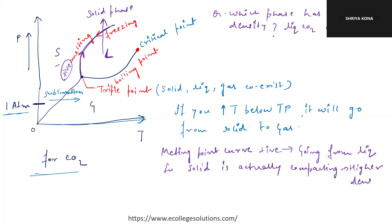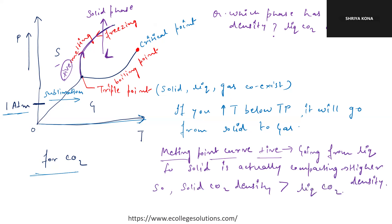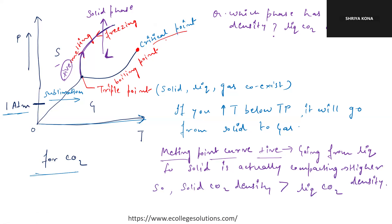You might already know that solid CO2 has higher density, but on the MCAT when you get two or three different types of curves, you need to explain which curve is for CO2 and which is for H2O. Because the melting point curve here has a positive slope, we can say that solid CO2 density is actually higher than liquid CO2 density. So far we have not touched the critical point — let's now learn something about it.